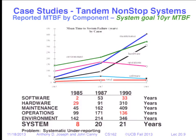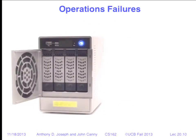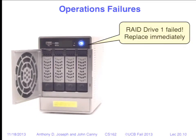A classic operations failure Jim Gray used: imagine a small business network-attached storage device with four drive bays using RAID. You get an alert: 'RAID drive one has failed — replace immediately.' You want to replace it immediately because of mean time to repair. If you suffer another drive failure before repairing this one, you'll lose all your data. RAID arrays with four drives in RAID 5, for example, can tolerate only a single drive failure.